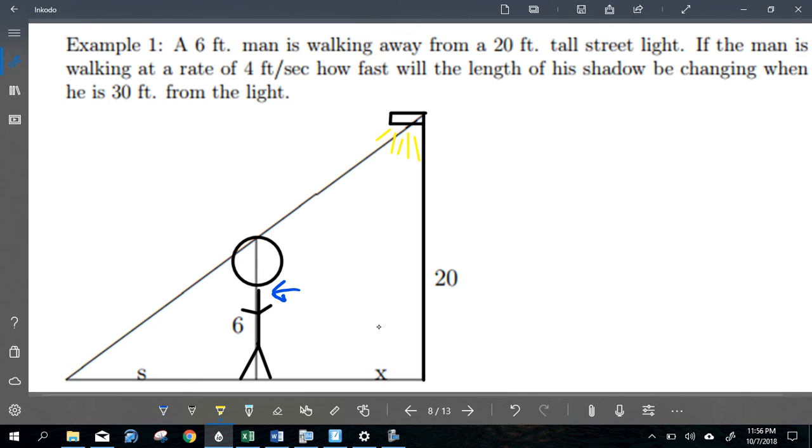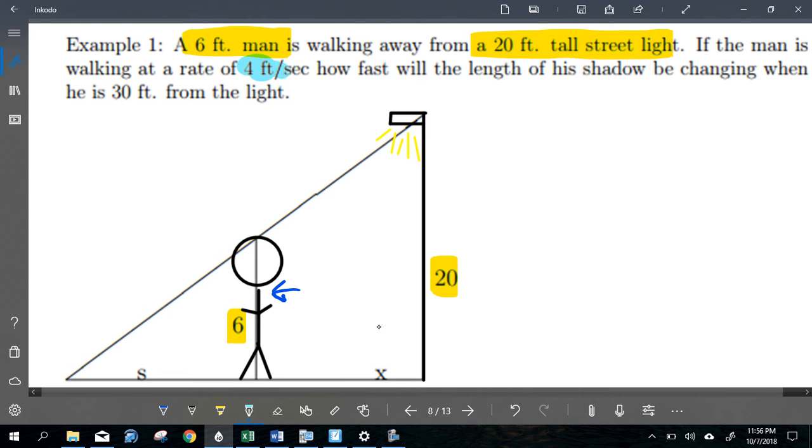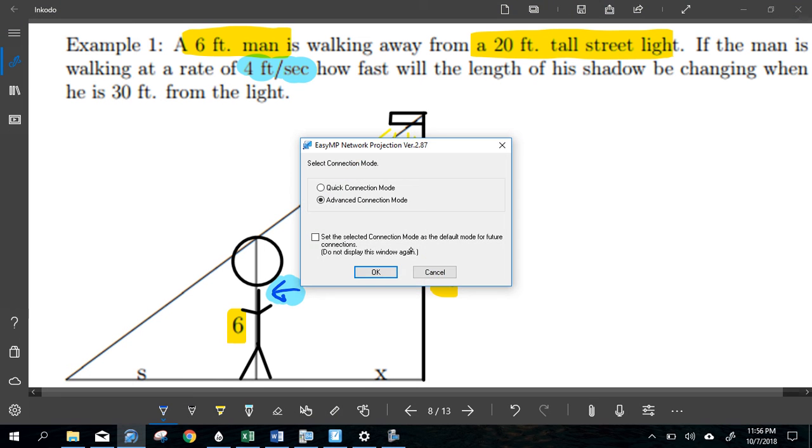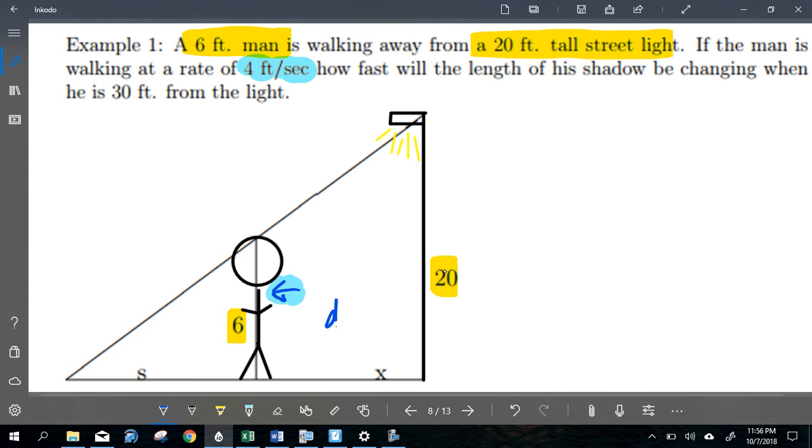So let's label some stuff. A 6-foot man, got it, is walking away from a 20-foot tall street light. Those two things are not changing, so they don't need to be variables. I'm not going to have a derivative. If the man is walking at a rate of 4 feet per second, so he's walking that way at 4 feet per second. So what's changing? The thing that's changing is the change in X over time. This value right here, this side of my triangle, is increasing at a rate of 4 feet per second. It's increasing because it's getting bigger, so it's going to be positive.